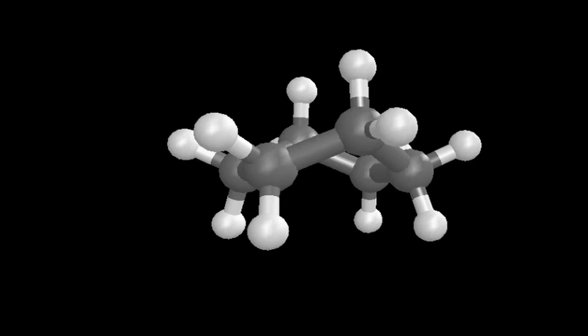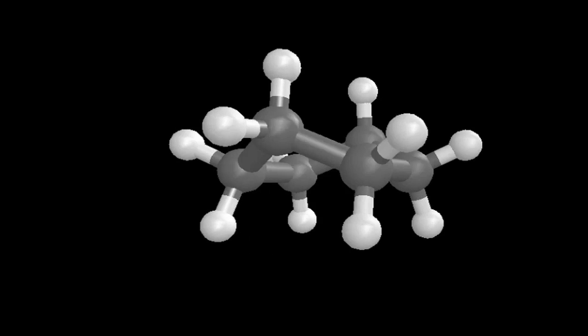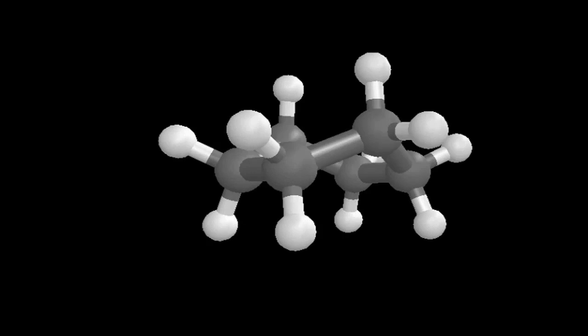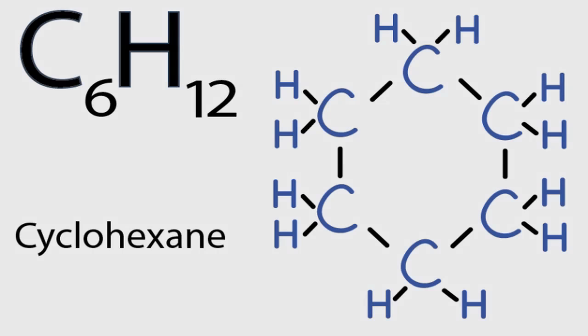Of course, they're always moving and changing around, so it's not a static picture as portrayed here. So that's the Lewis structure for C6H12, cyclohexane. This is Dr. B — thanks for watching.